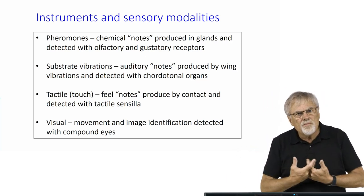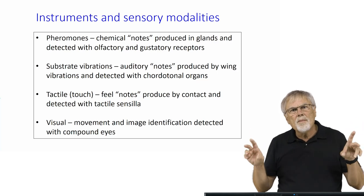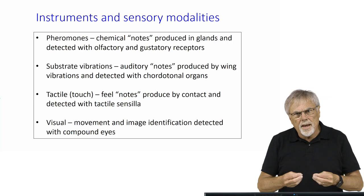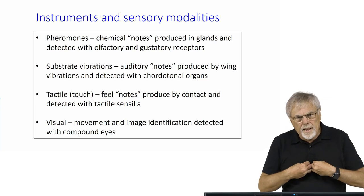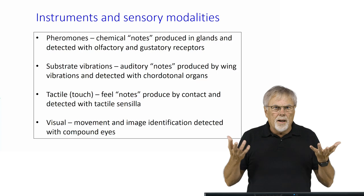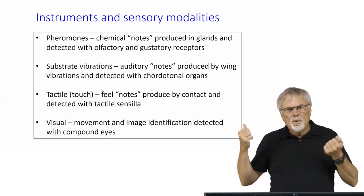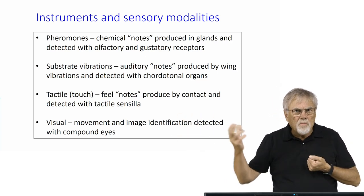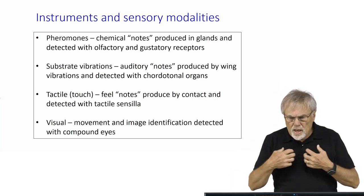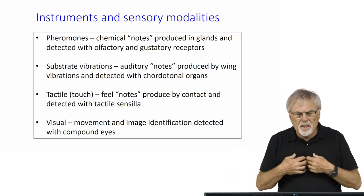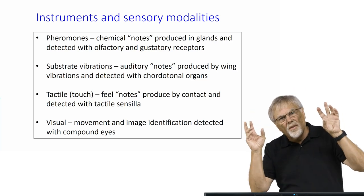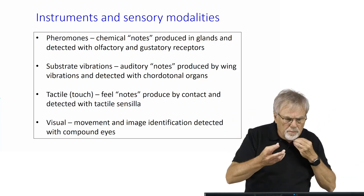They use pheromones. Pheromones are what I call chemical notes. They're compounds produced in glands inside the body that are then excreted to the outside of the body. And then these chemicals, when perceived by other individuals, modify their behavior in certain ways. So the chemical notes that are produced are detected with olfactory and gustatory receptors — the other individuals smell them and can taste them.